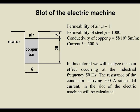In this tutorial we will analyze the skin effect occurring at the industrial frequency of 50 Hz. The resistance of the conductor carrying 500 amp sinusoidal current in the slot of the electric machine will be calculated.